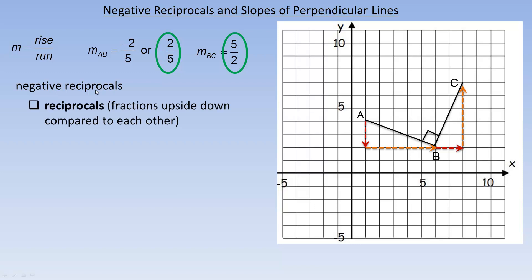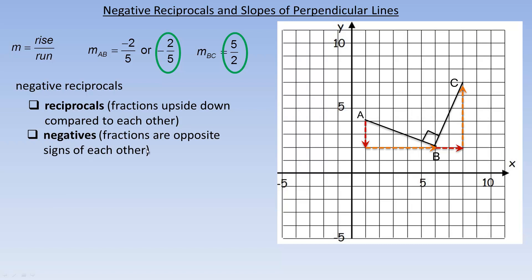These two fractions — negative 2 fifths and 5 halves — are called negative reciprocals. The 'reciprocals' part means the fractions are flipped compared to one another: the rise of down 2 became a run of 2, and the run of 5 became a rise of 5. The 'negative' part means they have opposite signs. To have perpendicular slopes, they must be opposite signs — one going down and one going up. You can't have two negative or two positive slopes that are perpendicular; one must be positive and one must be negative.